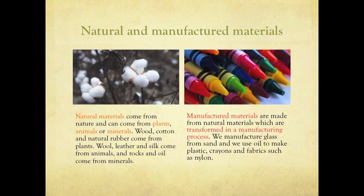Manufactured materials are made from natural materials which are transformed in a manufacturing process. We manufacture glass from sand, and we use oil to make plastic, crayons, and fabrics such as nylon.